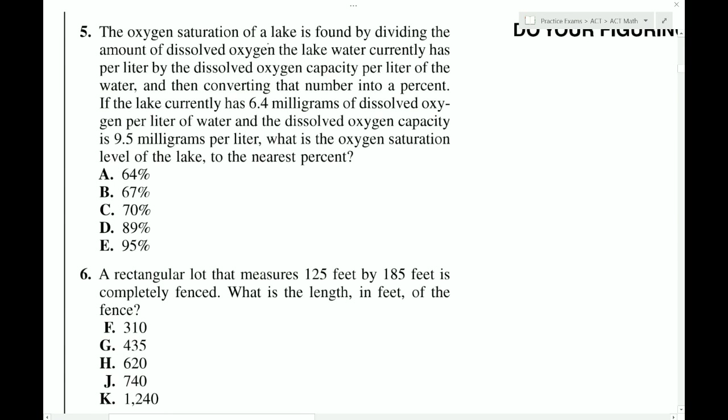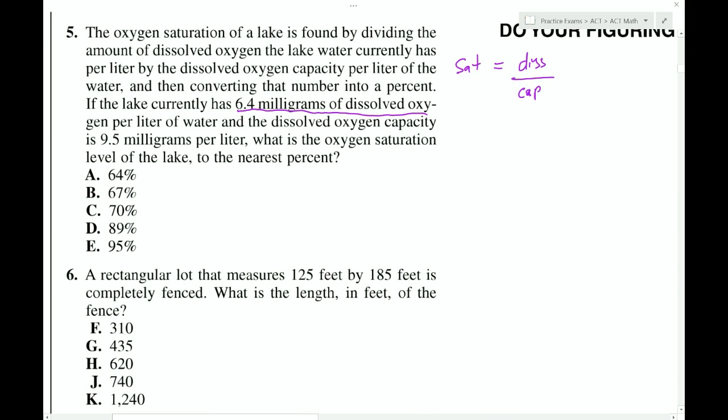The oxygen saturation of a lake is found by dividing the amount of dissolved oxygen the lake water currently has per liter by the dissolved oxygen capacity per liter. So let's make a formula out of that. The saturation is equal to the amount of dissolved oxygen, dissolved oxygen over the capacity. If the lake currently has 6.4 milligrams of dissolved oxygen, so that number would go in for the dissolved. So that's 6.4. And the dissolved oxygen capacity is 9.5. So that goes to the capacity position. What is the oxygen saturation? So we're looking for this number here.